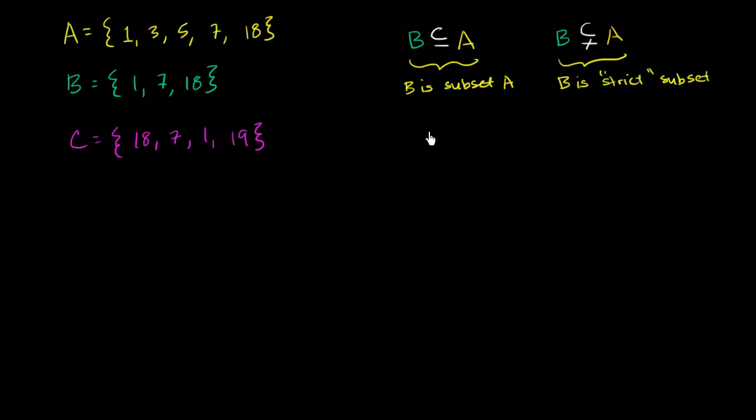So for example, we can write that A is a subset of A. In fact, every set is a subset of itself, because every one of its members is a member of A. We cannot write that A is a strict subset of A. This right over here is false.